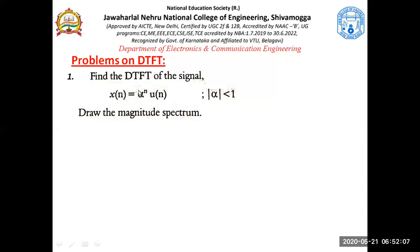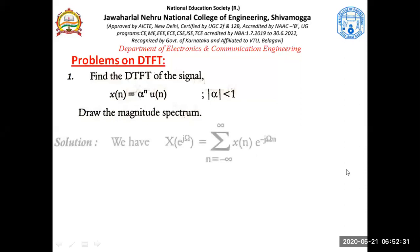The signal is a positive-time exponential, extending from zero to infinity, and alpha is less than one. We need to draw the magnitude spectrum as well. Since they are asking us to find out the DTFT, this is the equation for DTFT: X of e^(jω), where ω is the frequency. This is the frequency domain equation — the spectrum of X of n.